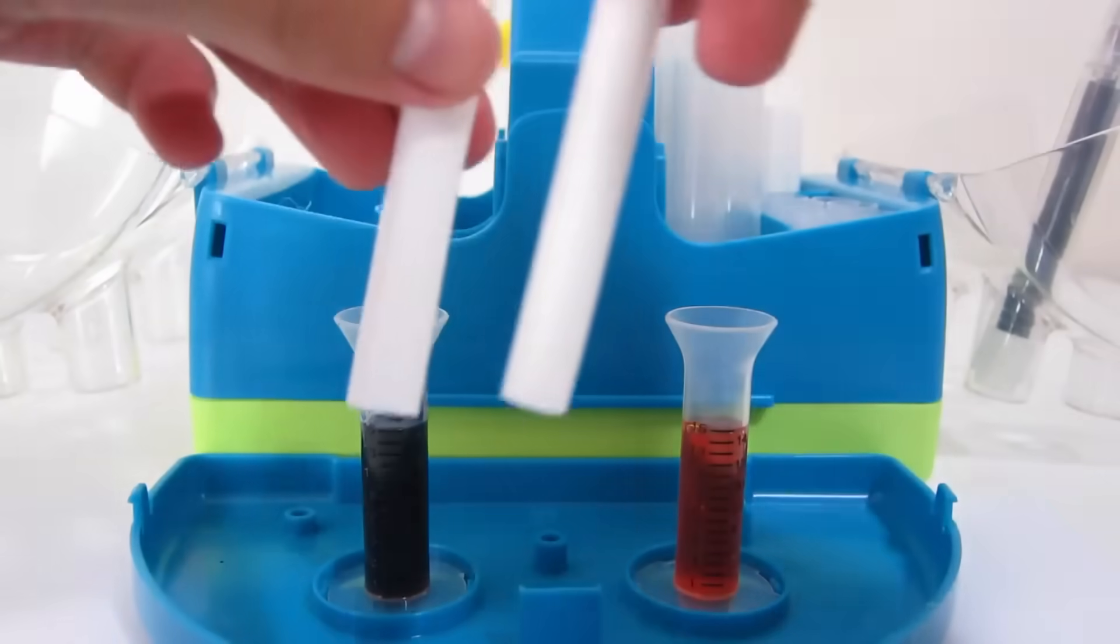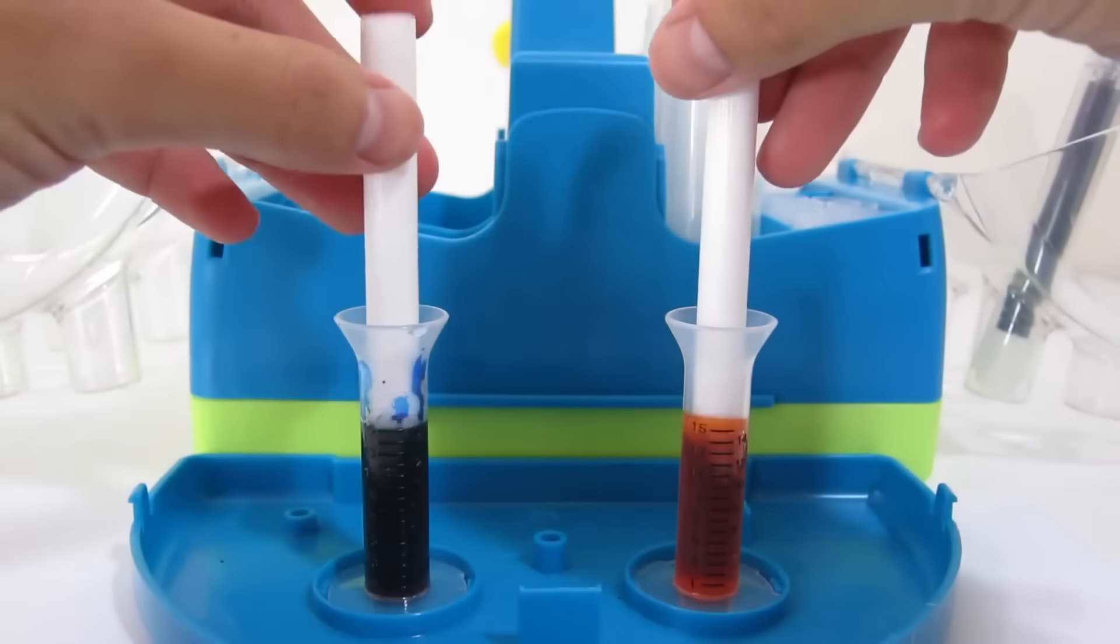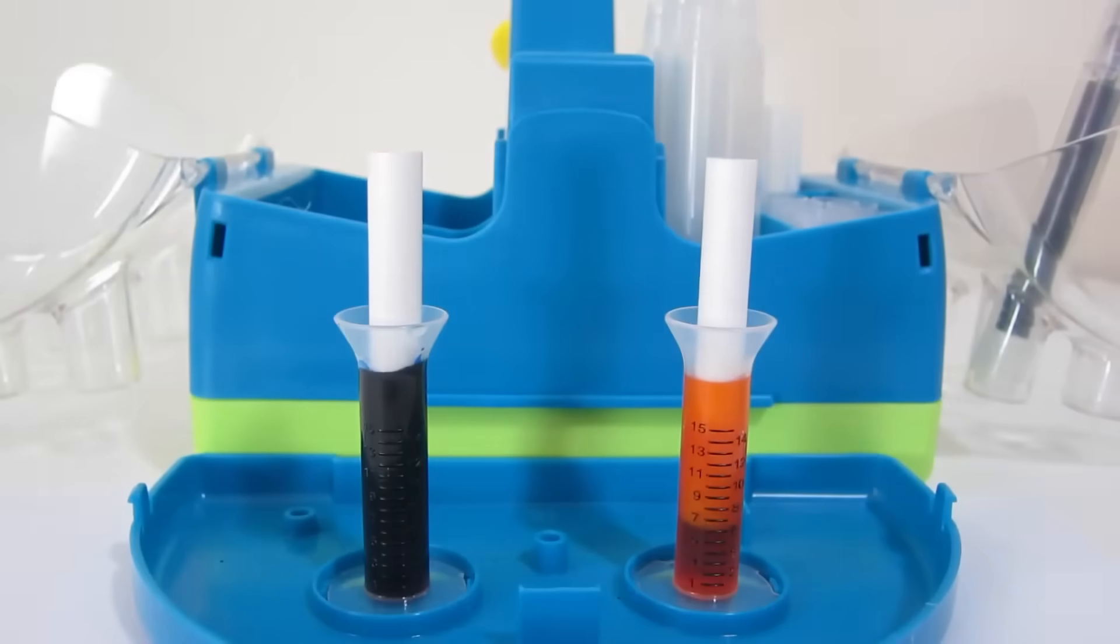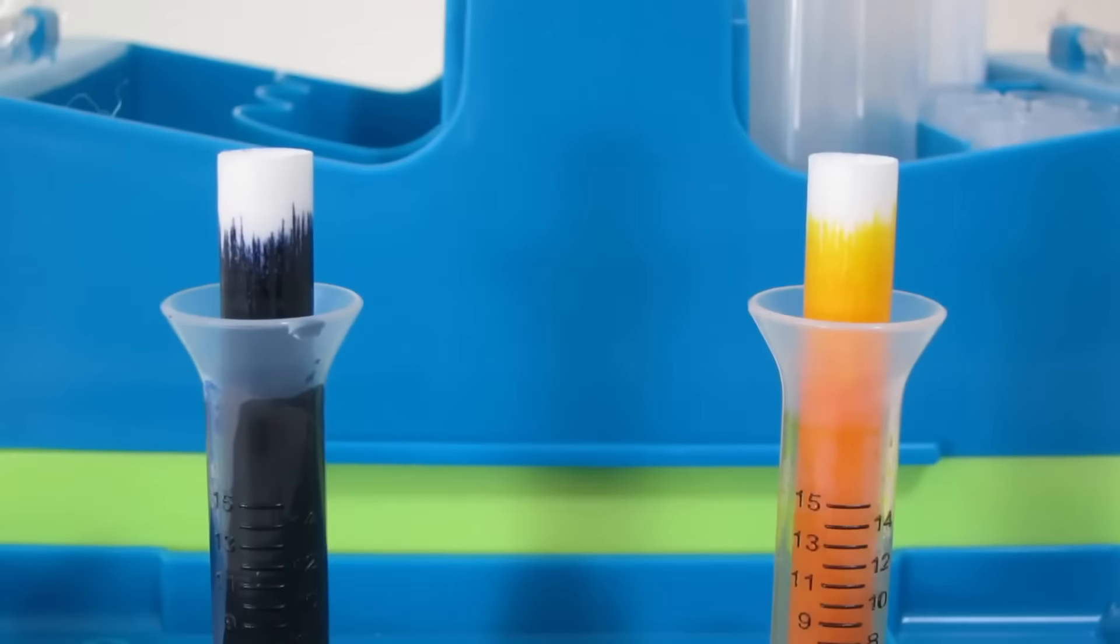Now let's add both of our marker cores into our tubes. Remember, make sure the marker core absorbs all of the color. That's really neat. Isn't this fun? Our colors are all absorbed.